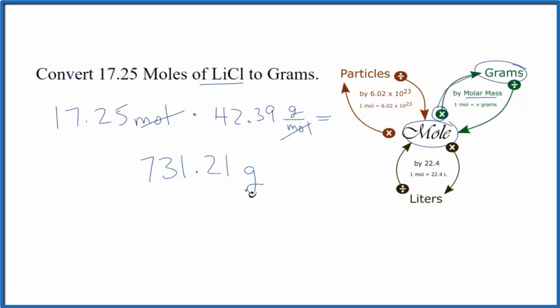If you were given grams and you needed to get to moles, you just do the reverse. You take your grams, divide by the molar mass again, and that would give you moles.